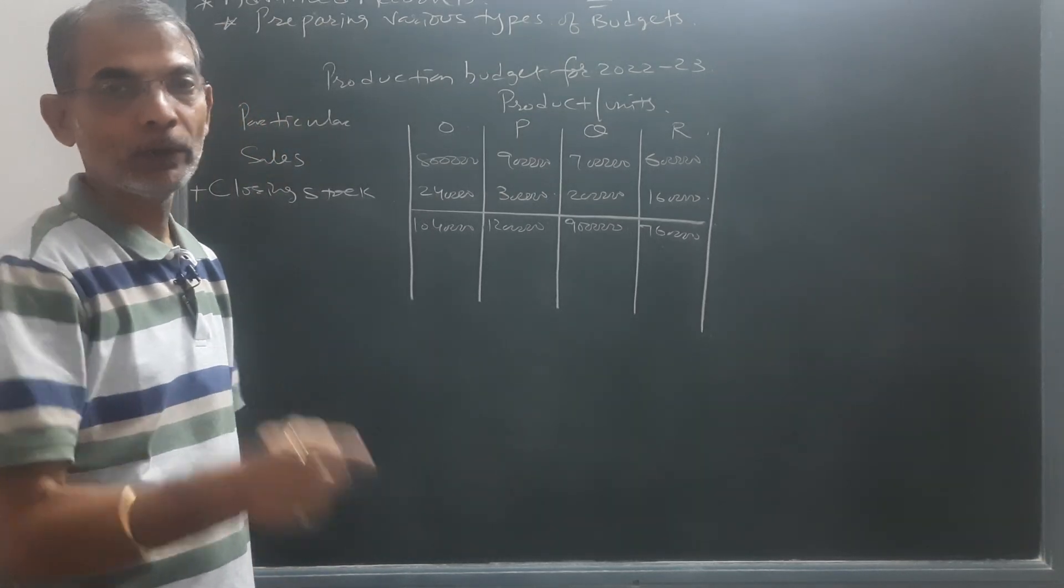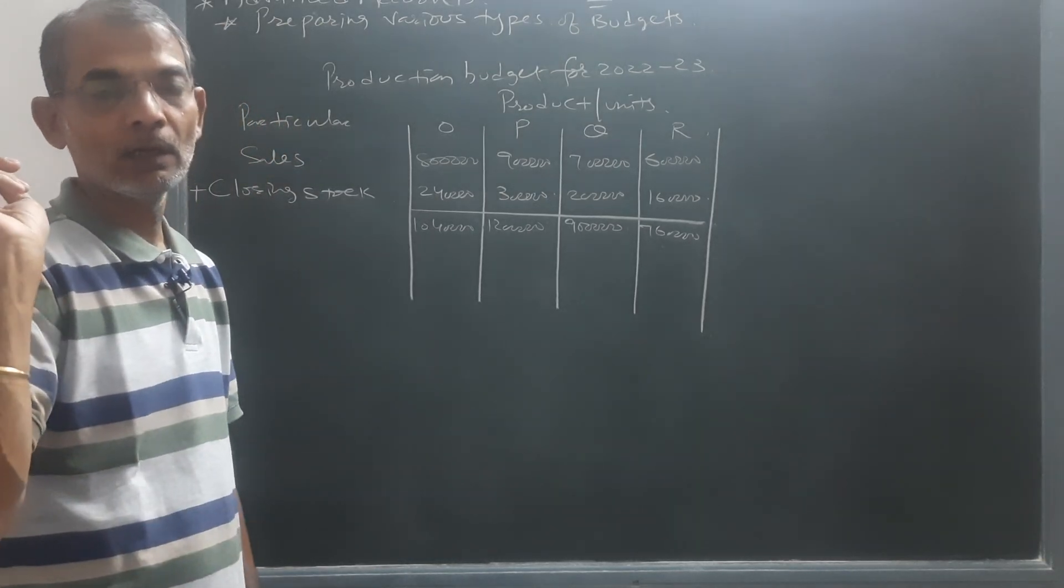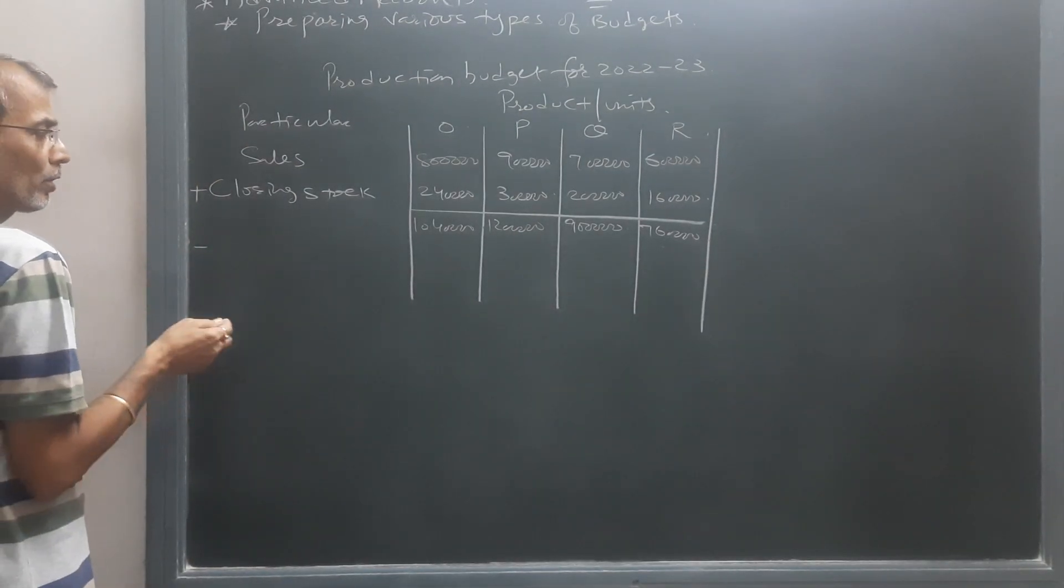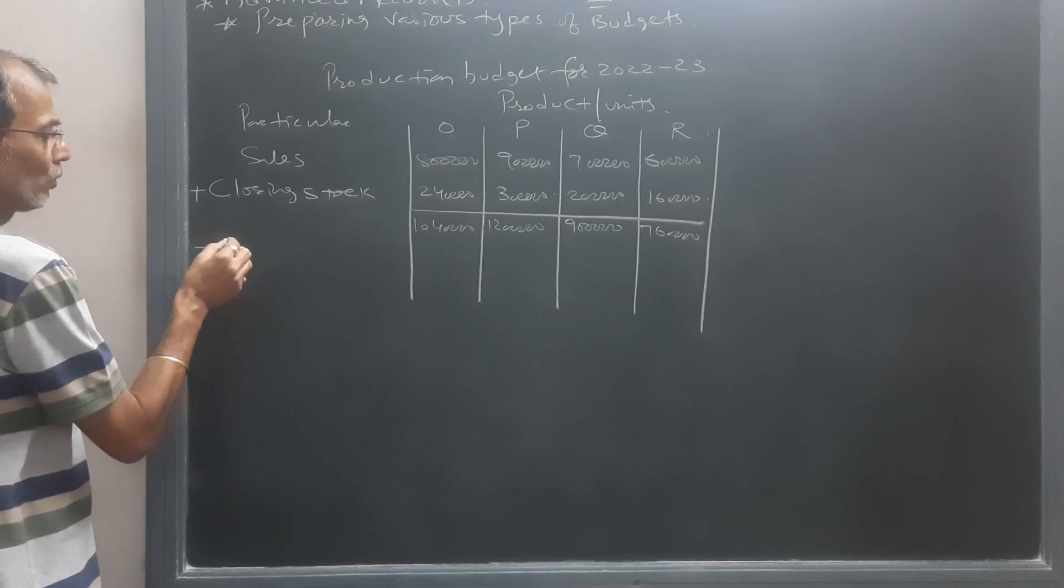In this way, company needs actually to produce these units, but it has already opening stock, so that will be subtracted and we will come to know the real production which company has to do.